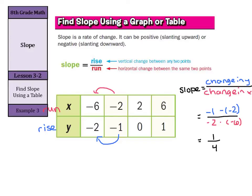So my change here is 1 fourth. Now, the neat thing is it should work for any of the points that you choose. Let's say you go from 6 to 2 here. Well, you could do 6 minus 2 on the bottom, 1 minus 0 on the top, and you would again get 1 fourth.